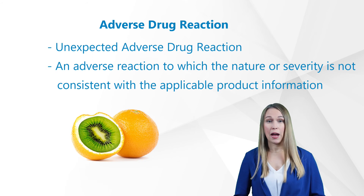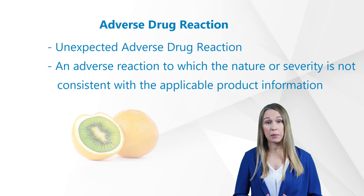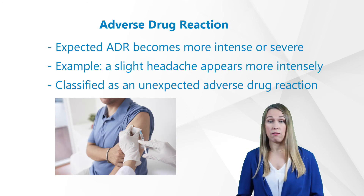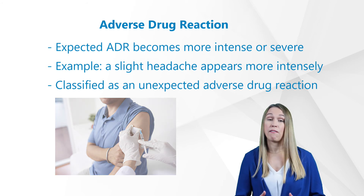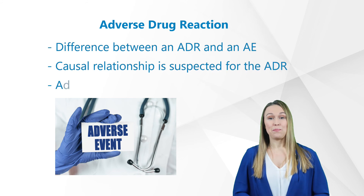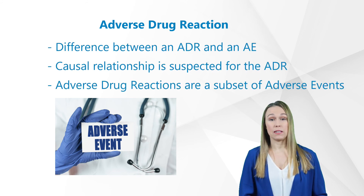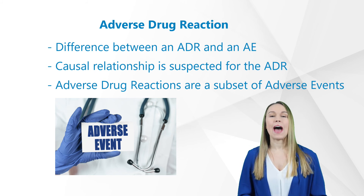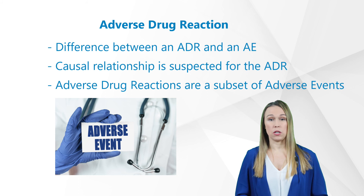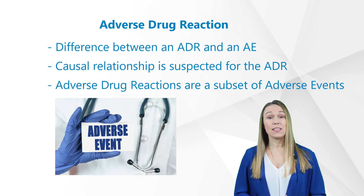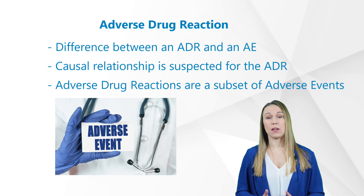The unexpected adverse drug reaction is an adverse reaction whose nature or severity is not consistent with the applicable product information. This means that if a certain expected adverse drug reaction — such as a slight headache or light nausea — appears more intensely and becomes more severe, it is now classified as an unexpected adverse drug reaction. The principal difference between an adverse event and an adverse drug reaction is that a causal relationship is suspected for the adverse drug reaction, but is not required for the adverse event. In this framework, adverse drug reactions are a subset of adverse event reports.